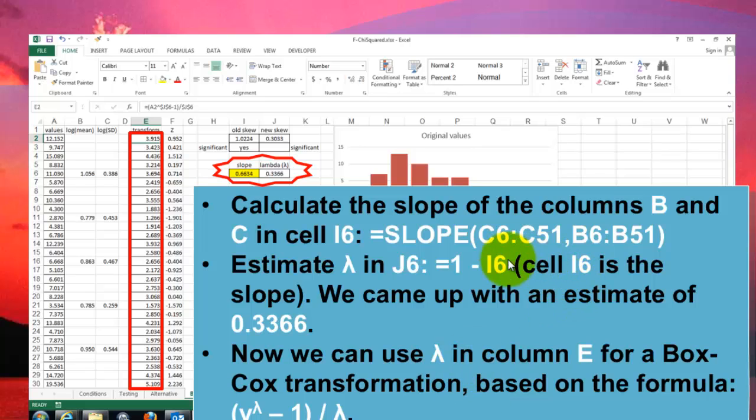Then the next step. We calculate the slope of the columns B and C in cell I6. So that has the slope function in it. C6 through C51 on B6 through B51. And we estimate lambda in J6 equals 1 minus I6, which is the slope. And we came up with an estimate of 0.3366.